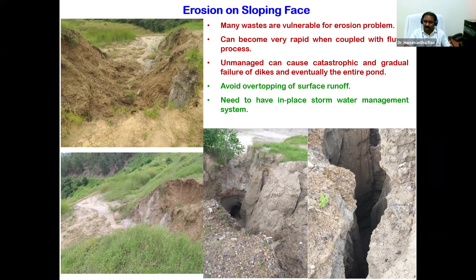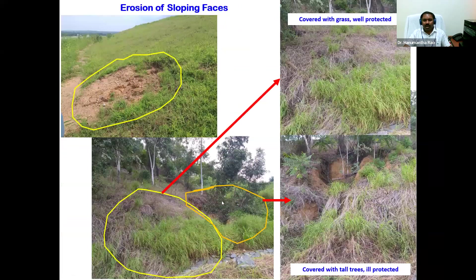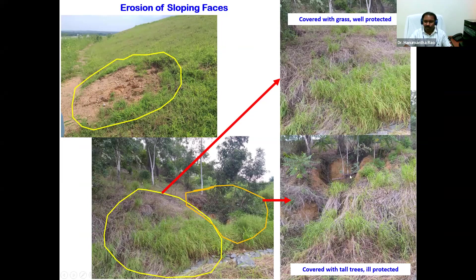During a site visit, I documented typical erosion problems on tailings facilities — erosion starting at the toe of the dike or embankment. There is an interesting debate in the engineering community about what type of vegetation should be maintained. At the sites I visited, wherever bushes or grass were present, good protection against erosion was observed, while areas with tall trees also showed protection. This demonstrates it is better to go for small shrubs rather than planting large trees.